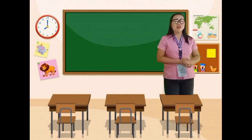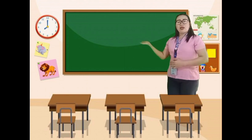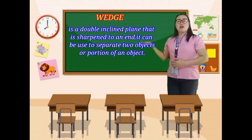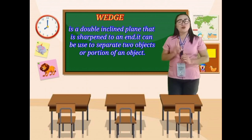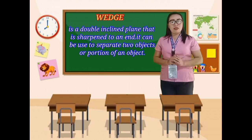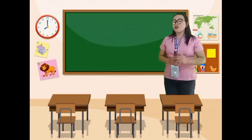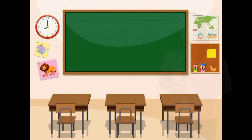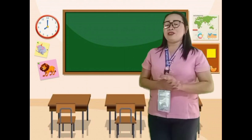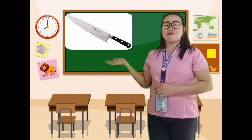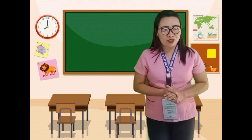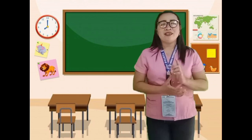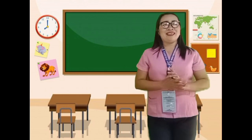The next type of simple machine is the wedge. A wedge is a double inclined plane that has been sharpened to an end. It can be used to separate two objects or portions of an object. Can you give me an example of a wedge? Very good! A knife, axe, and pin are examples of a wedge. The thinner the wedge, the lesser the effort needed.